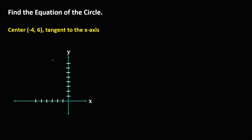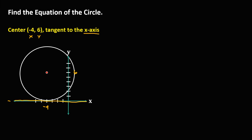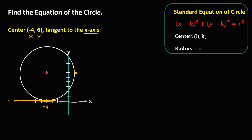For the second given, the center has x is negative 4 and y is positive 6. So x is negative 4, and y is positive 6 — 1, 2, 3, 4, 5, 6. This is now the coordinate of the center. Since the circle is tangent to the x-axis, this is now the circle tangent to the x-axis.